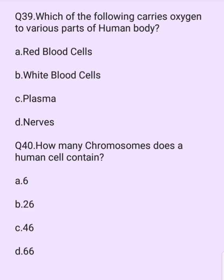Which of the following carries oxygen to various parts of the human body? Options are: red blood cells, white blood cells, plasma, nerves. The answer is option A: red blood cells.